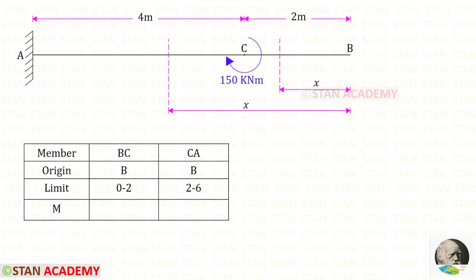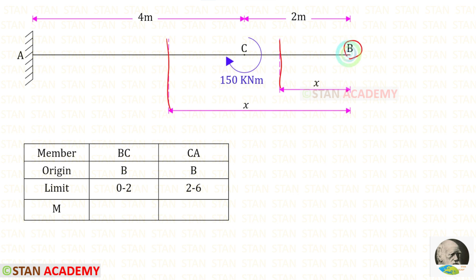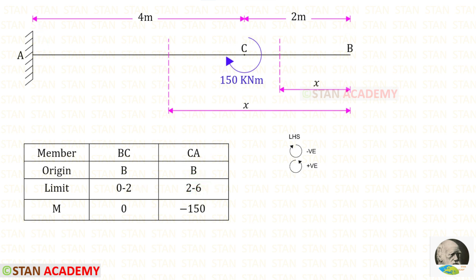Now let us make a table. In the table, first let us enter the members. There are two members: BC and CA. For both sections, the origin point is B. For member BC, the limit is 0 to 2. For member CA, it is 2 to 6.